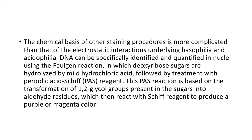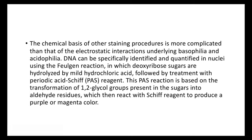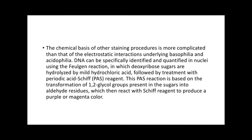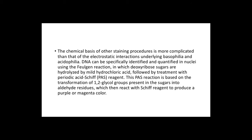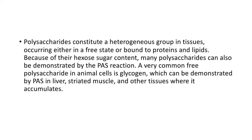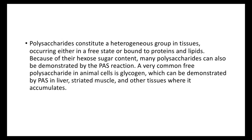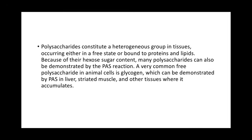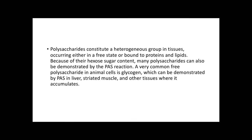The PAS reaction is based on the transformation of 1,2-glycol groups present in the sugars into aldehyde residues, which then react with Schiff reagent to produce a purple or magenta color. Polysaccharides constitute a heterogeneous group in tissues, occurring either in a free state or bound to proteins and lipids. Because of their hexose sugar content, many polysaccharides can be demonstrated by the PAS reaction. A very common polysaccharide in animal cells is glycogen, which can be demonstrated by PAS in liver, striated muscles, and other tissues where it accumulates.